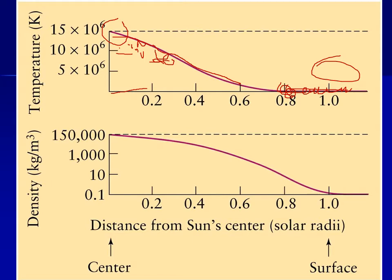Near the surface of the sun the density is pretty low — about 0.1 kilograms per cubic meter — which is actually less dense than air. Near the center of the sun, it's about 150 metric tons per cubic meter. To put that in perspective, the volume under your typical dining room table might represent a couple hundred metric tons of material if it were at the center of the sun.